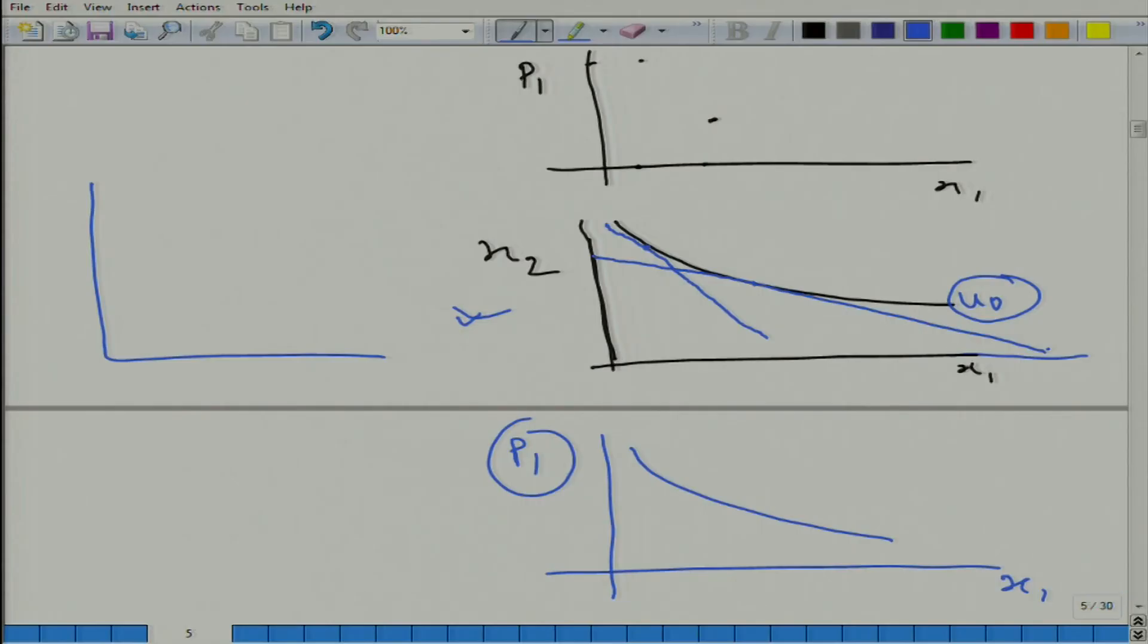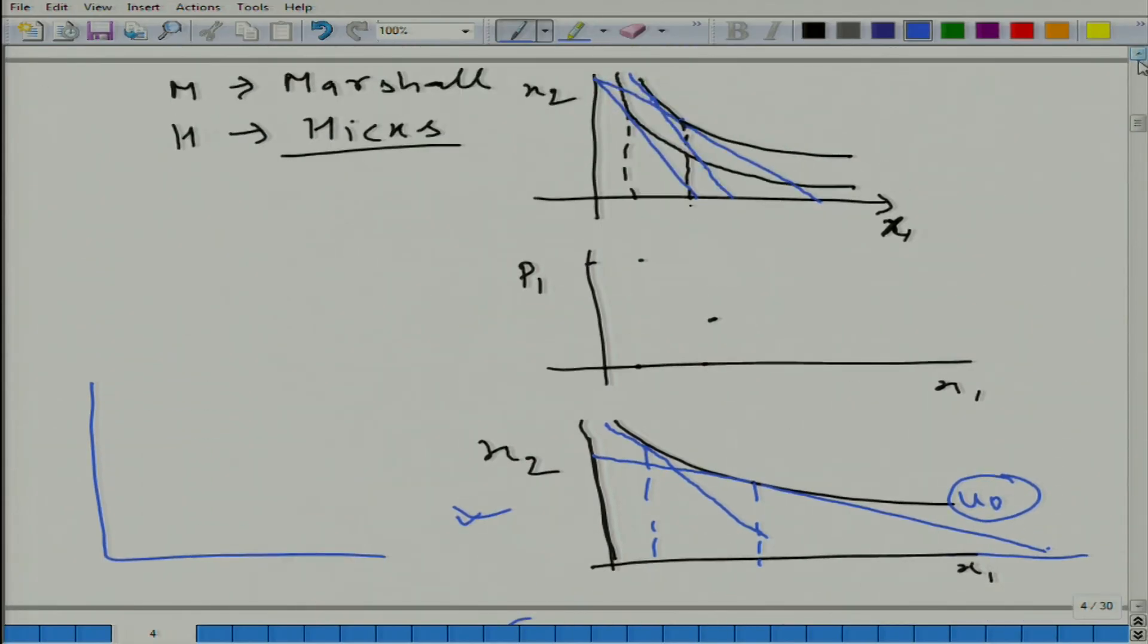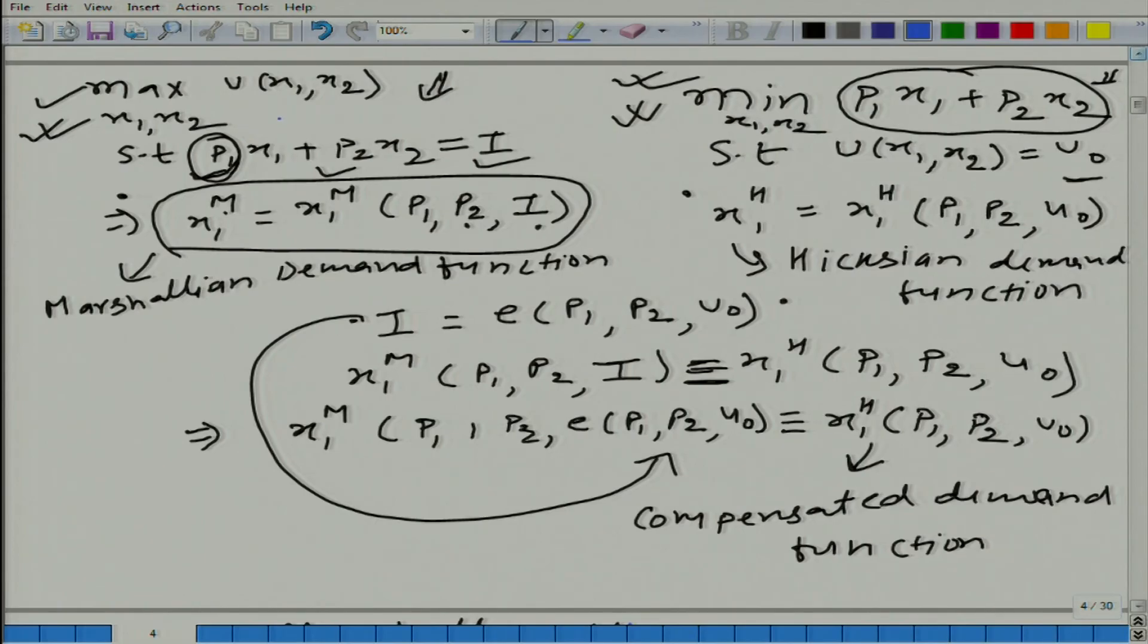So, now you understand the difference between these two, the Marshallian demand function and Hicksian demand function. So, you see again we are going back to the substitution effect. Here if we look in the context of utility maximization problem, then the effect can be divided into two parts: substitution effect as well as income effect. But, if we are looking in the context of Hicksian, then we do not need to divide it into two parts. What do we get? Substitution effect, because there we have already fixed the utility we are minimizing the expenditure for a particular level of utility.